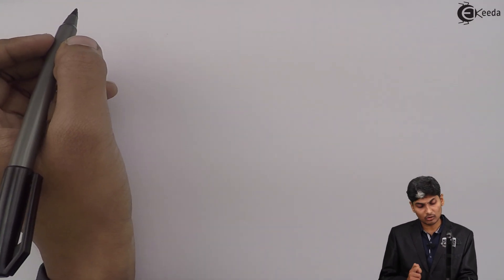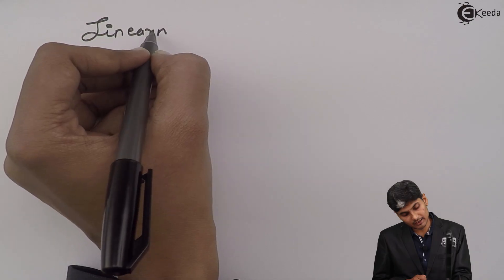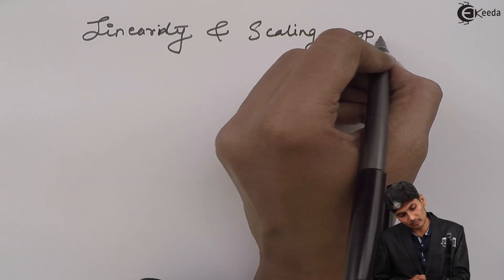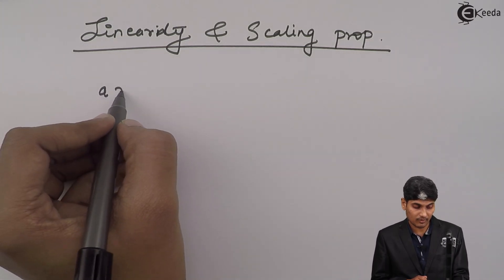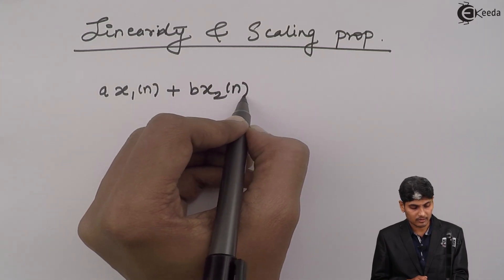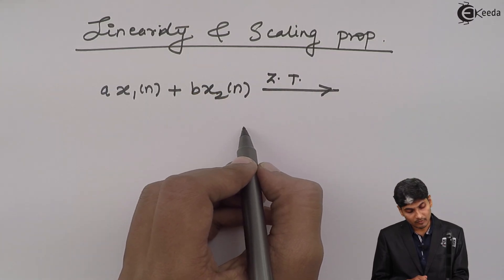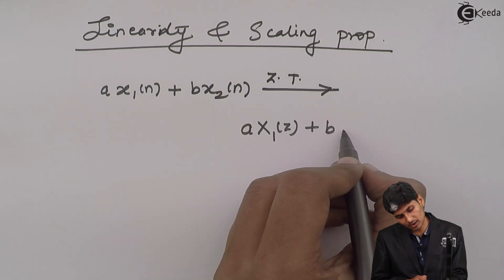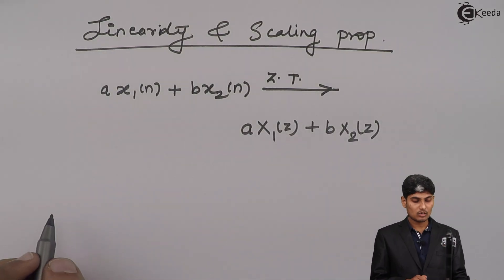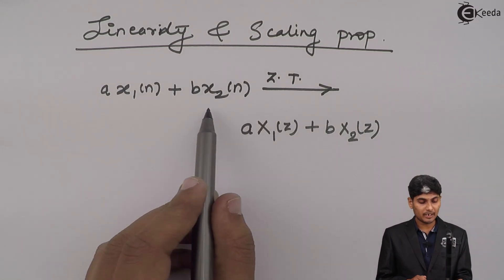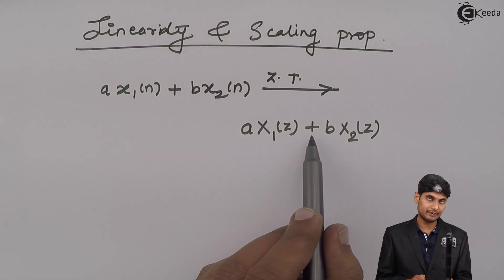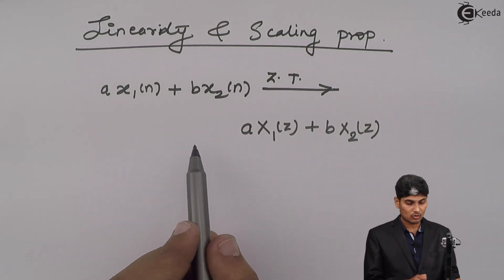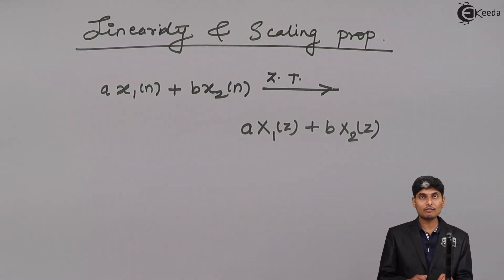Let us see the properties of Z transforms that we will be using. We will be using very often only one property: linearity and scaling property. The linearity property and scaling property says that if I have A·x₁(n) + B·x₂(n), then its Z transform is A·X₁(z) + B·X₂(z). Z operates independently on X₁, operates independently on X₂, and then adds them both. A and B are constants, so they come out of the operator. This is the linearity and scaling property which we will often use in Z transforms.